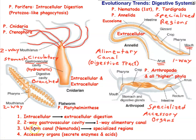The next evolutionary trend is from a uniform canal — as seen in nematoda — to specialized regions. In roundworms, the alimentary canal running from mouth to anus is basically one uniform, straight tube with no real specialization. But we see in evolution a trend towards specialized regions, with different parts of the digestive tract doing different things, as represented in phylum Annelida.